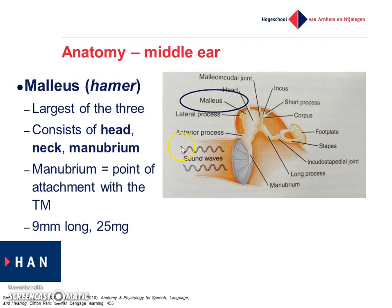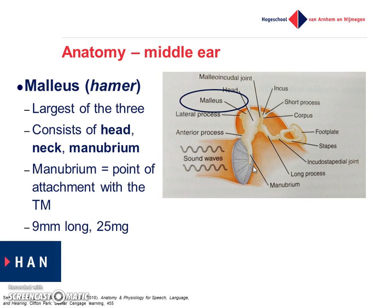First of all, we have a look at the malleus — which means 'hammer' in Dutch. The malleus is the first of the three ossicles, consisting of a manubrium, neck, and head. With the manubrium it attaches to the tympanic membrane. The malleus is about nine millimeters long and about 25 milligrams — tiny and not heavy at all. These are the smallest bones of our body.